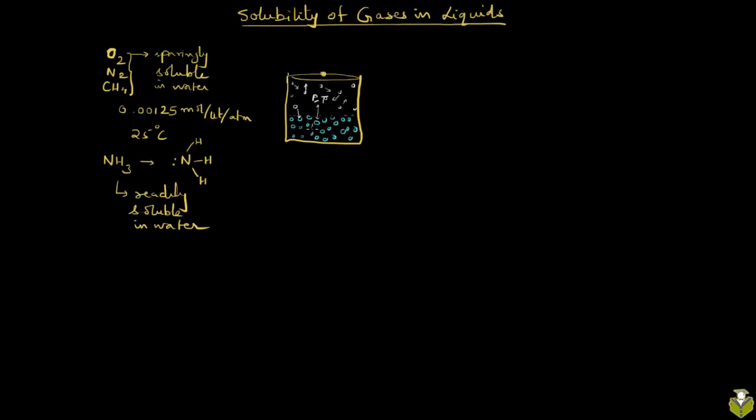Let me draw some of these gaseous particles in this. The system is assumed to be in dynamic equilibrium, and what we mean by that is a number of gaseous particles entering and exiting the solution phase are equal at that point.